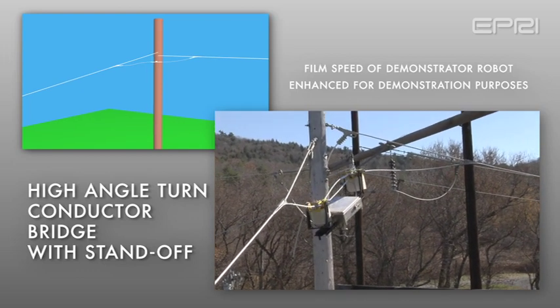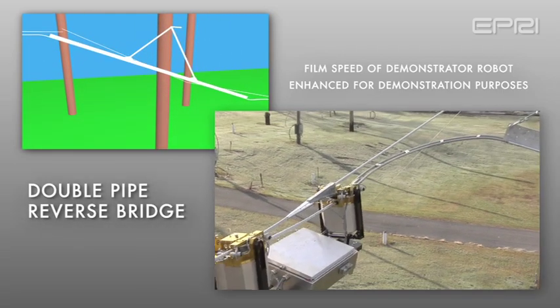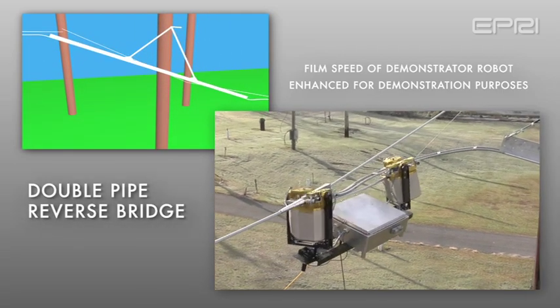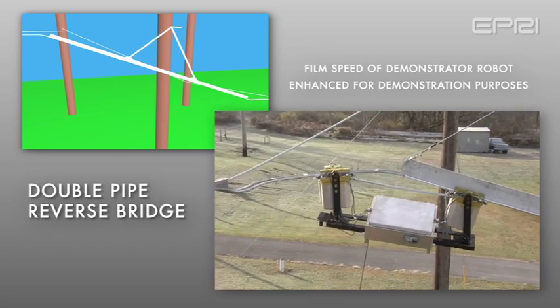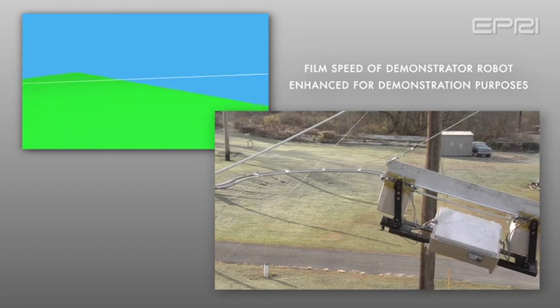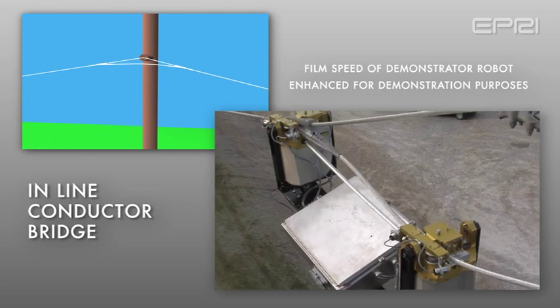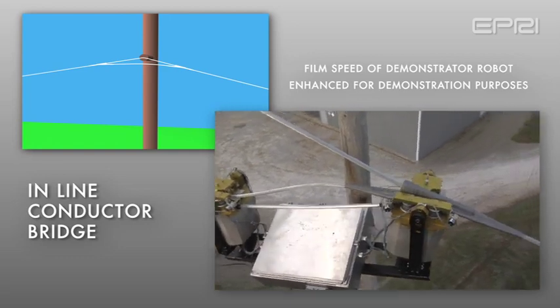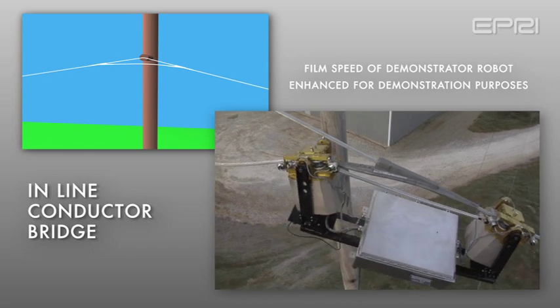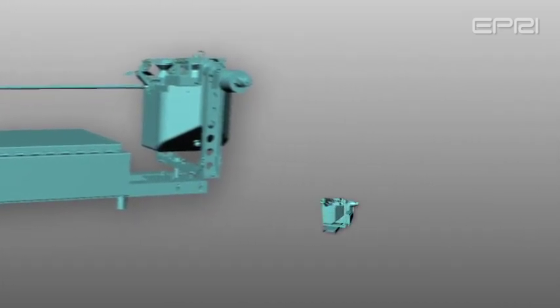As the robot approaches a diverter, spring-loaded rollers automatically expand, disconnecting the robot from the shield wire and onto the bypass system. Once the robot has bypassed the obstacle or structure, it returns to the shield wire. The success of these tests in Lenox now paves the way for the development of the robot's other envisioned features.